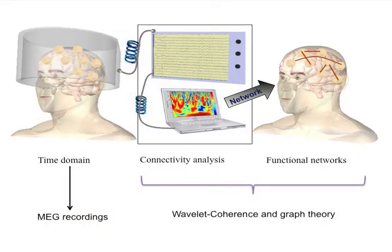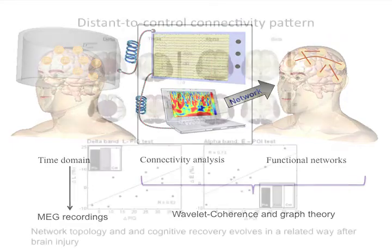We have this magnetoencephalography system in Madrid. The principal advantage of this system is that we have very good temporal resolution. It allows us to study the oscillations of the brain, and principally we can study functional connectivity — that means the statistical relations between different parts of the brain. We apply different methods of functional connectivity, both in sensor and source space, and then we apply graph theory measures to estimate and characterize the topology of this network.